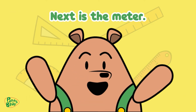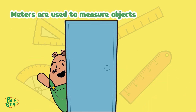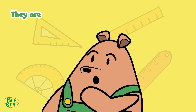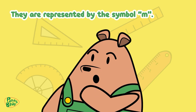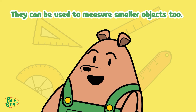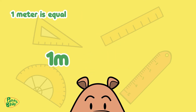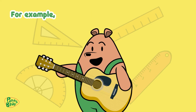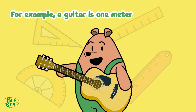Next is the meter. Meters are used to measure objects that are longer than the width of a doorway. They are represented by the symbol M. They can be used to measure smaller objects too. One meter is equal to 100 centimeters. For example, a guitar is 1 meter long.